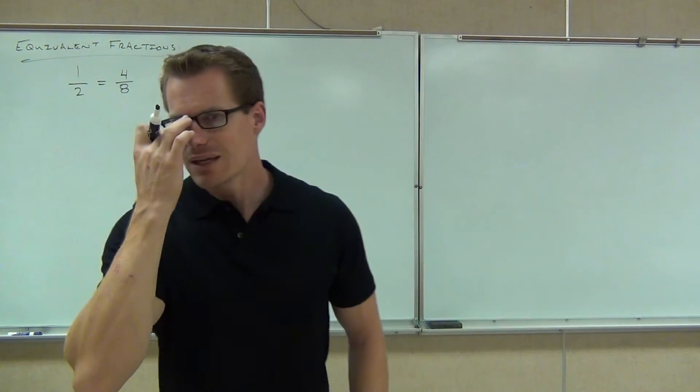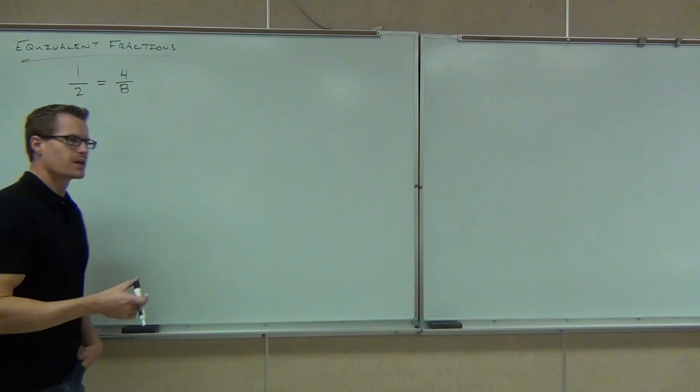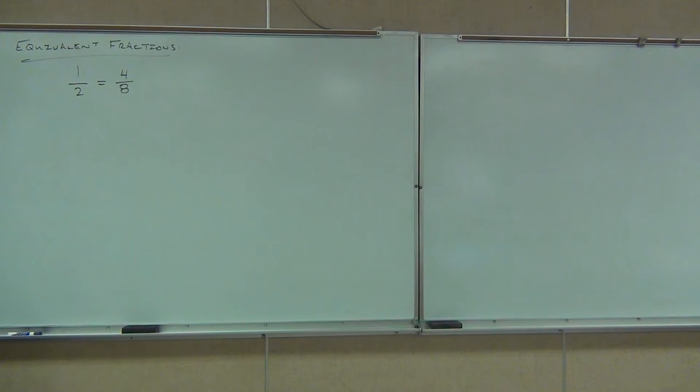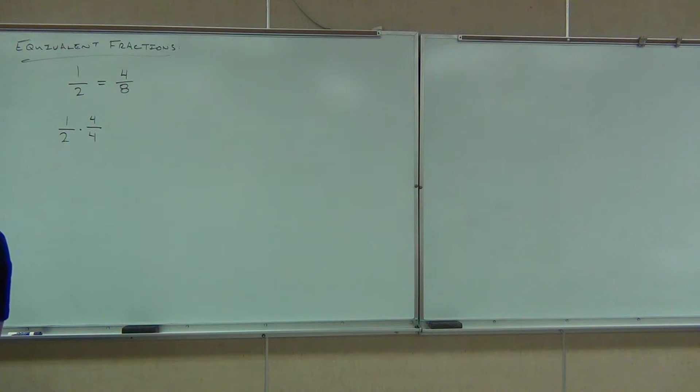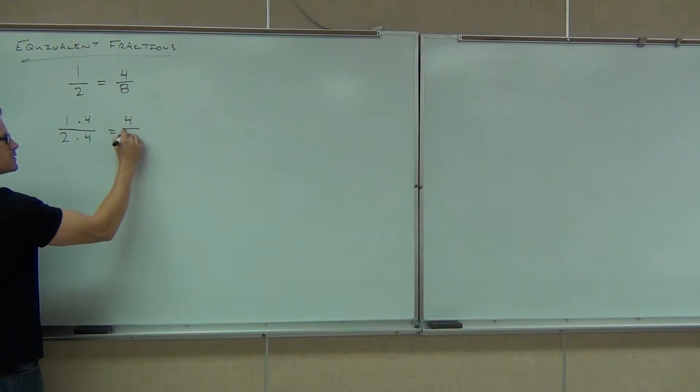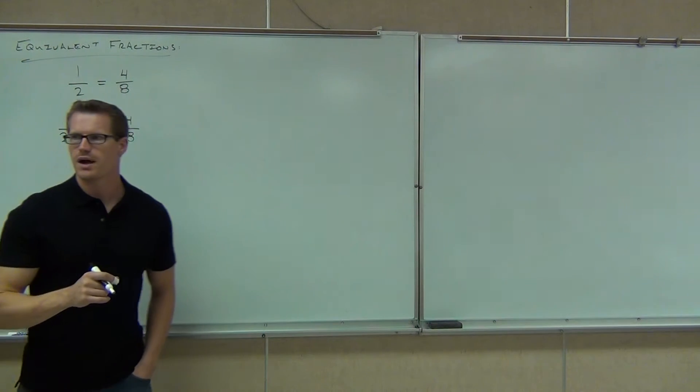Now here's what I need to show you. How we can get from one fraction to an equivalent form of fraction. If I take and multiply both top and bottom of our fraction by the same number. Let's say I took 1 half and I multiply it by 4 over 4. If I multiply the top number by 4 and the bottom number by 4. What's 1 times 4? 4. What's 2 times 4? 8. That's going to give me all the time an equivalent fraction.